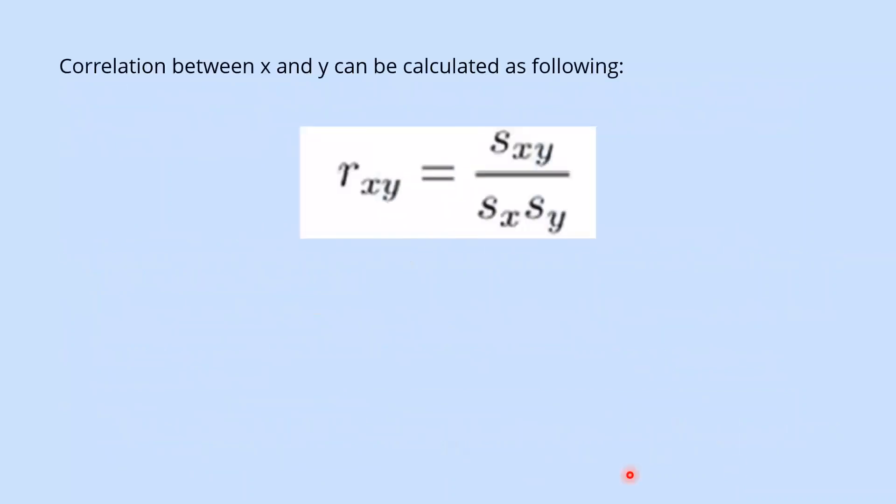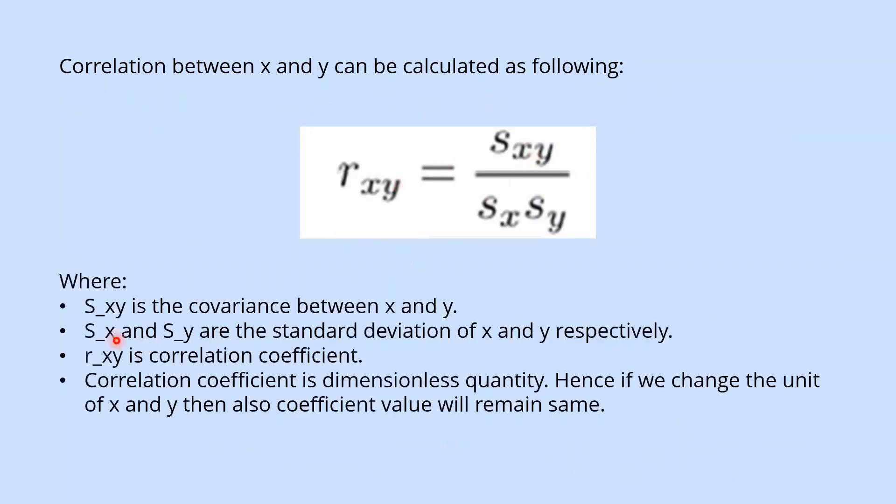This is the formula of correlation, where Sxy is covariance between x and y, Sx and Sy are the standard deviation of x and y respectively, and Rxy is the correlation coefficient.